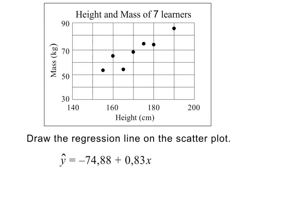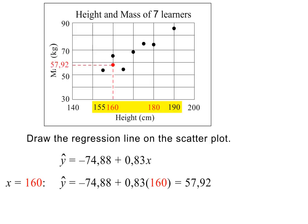Next, we are asked to draw the regression line on the scatter plot. To do this, we can substitute any two x values between 155, the smallest value, and 190, the biggest value. I have decided to use the values 160 and 180. Next, we substitute 160 in place of x in the equation. Correct to two decimal places, this gives a value of 57.92 for y hat. Let's plot this point on the scatter plot.